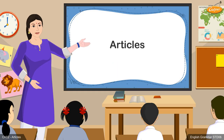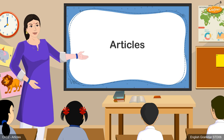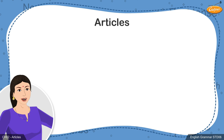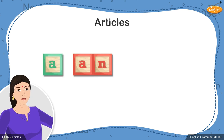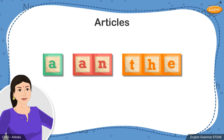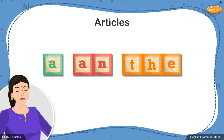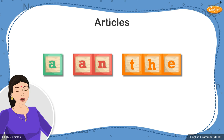Good day to you, students. Today we'll be learning about another important topic in English grammar. When we speak to someone or write sentences, we often use words like a, an, and the. But do you know what these words are and how they must be used while making sentences? The words a, an, and the are called articles.